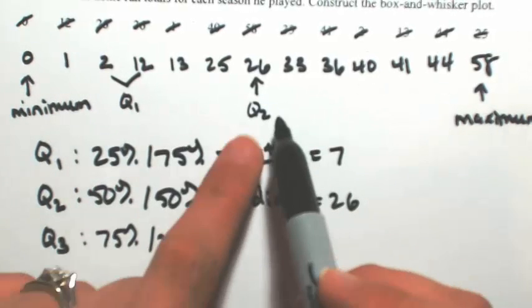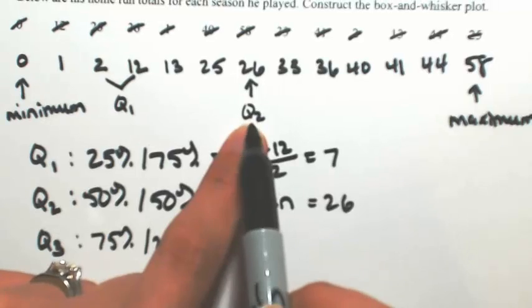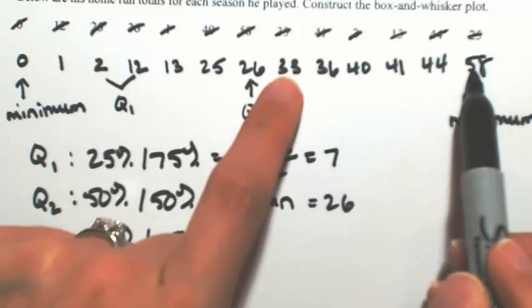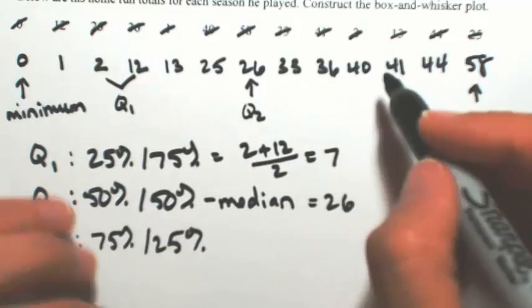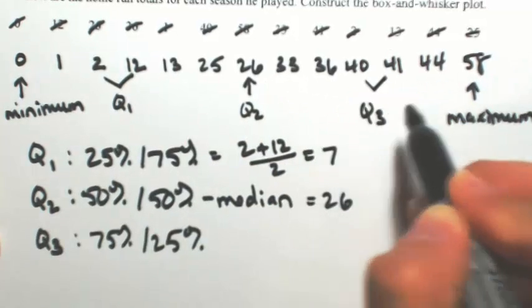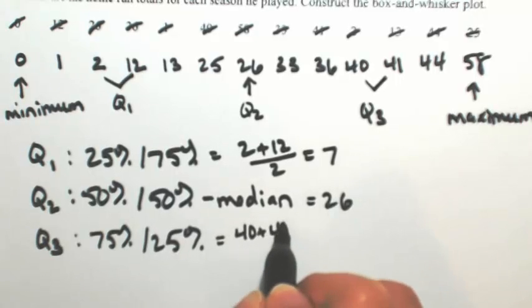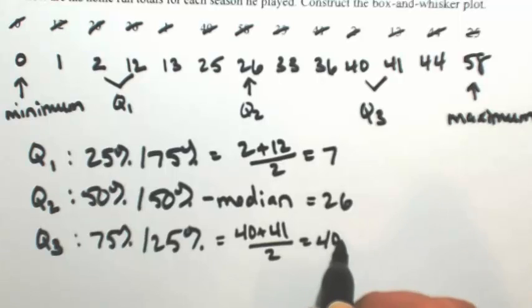Do the same thing for Q3. So Q2 is 26. So after that, 1, 2, 3, 4, 5, 6 numbers. So taking the median is going to be Q3. So that's 40 plus 41 divided by 2 or 40.5.